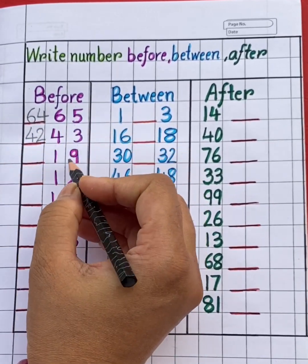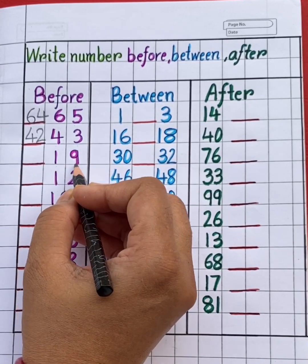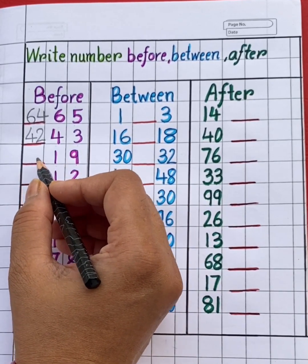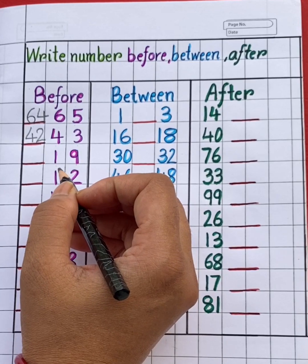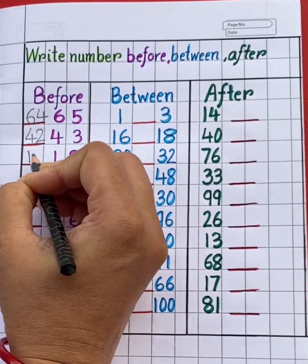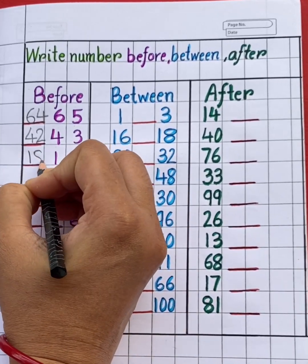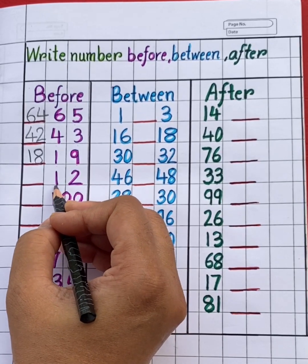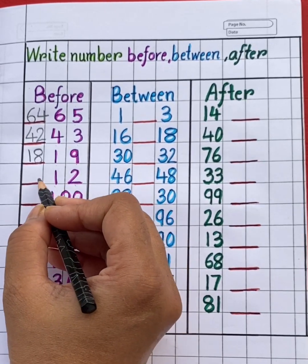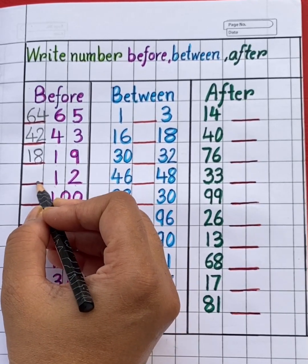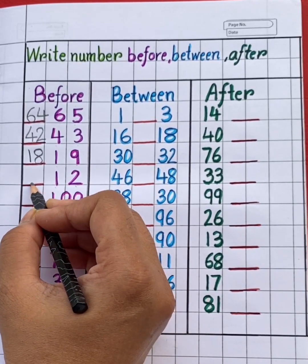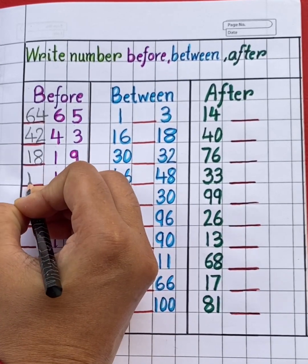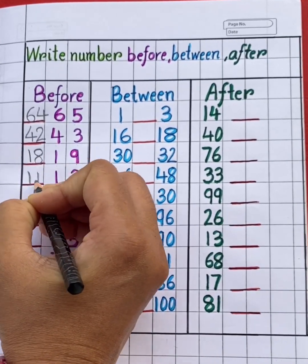Next number is 19. Which number will come before 19? Yes, 18. Next number is 12. Which number will come before 12? Yes, before 12 is 11.